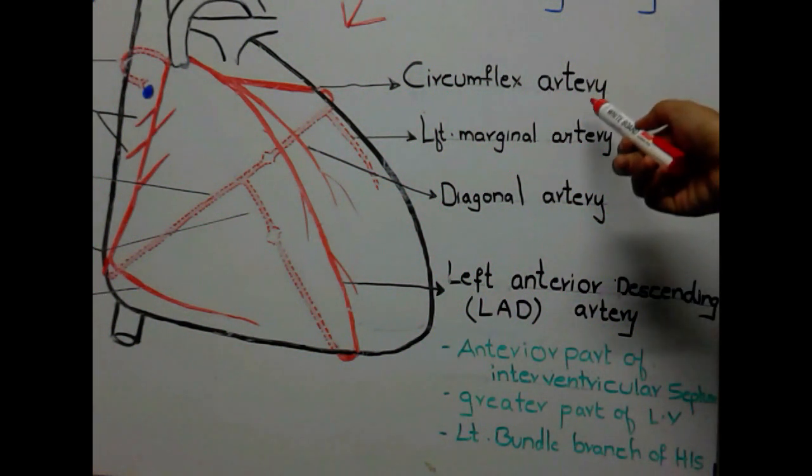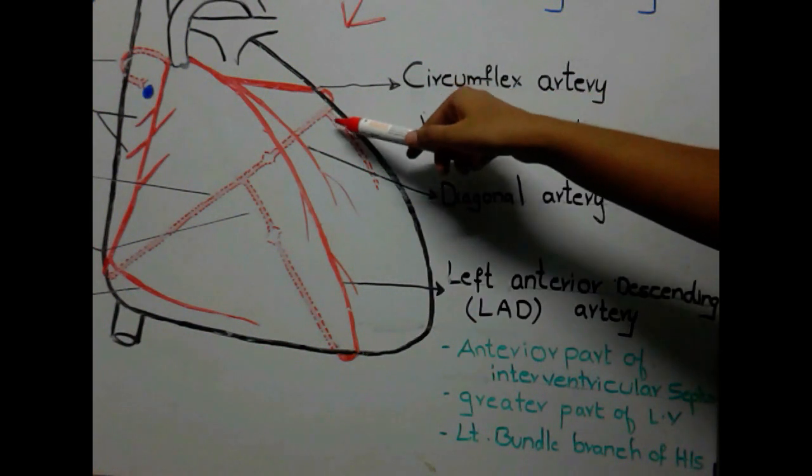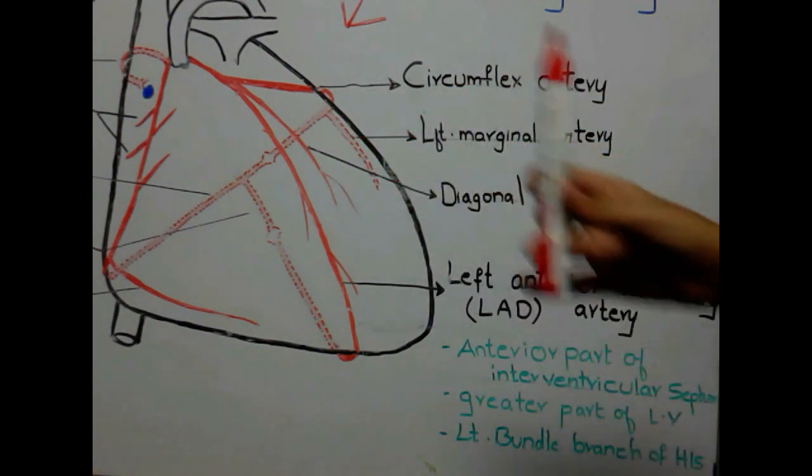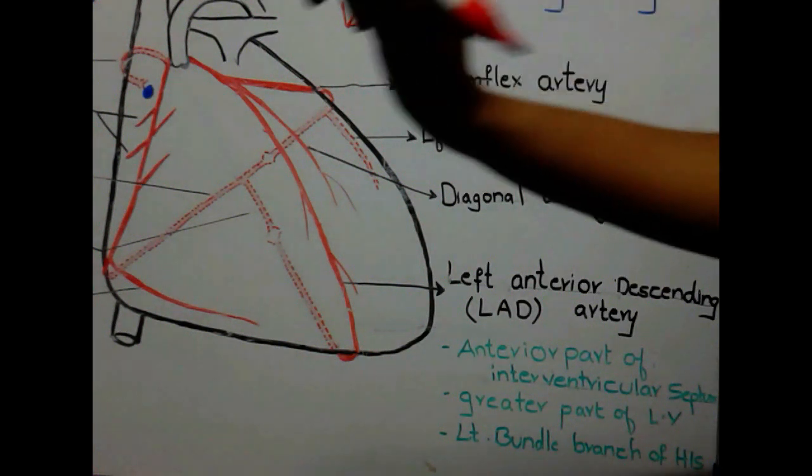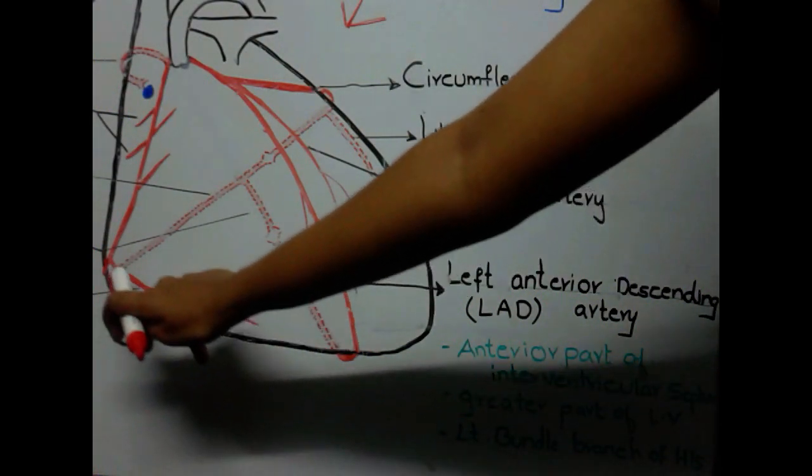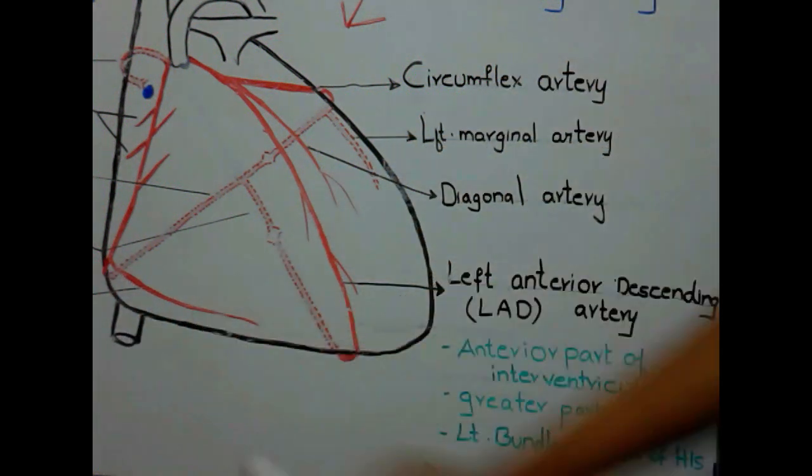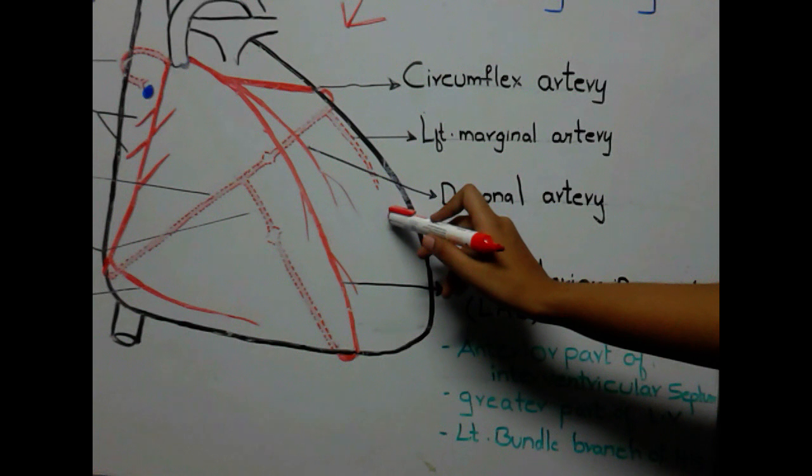This circumflex artery posteriorly gives a branch called as left marginal artery. You know we have a marginal artery on the right side also, but this is on the anterior aspect of the heart and this is on the posterior aspect of the heart.